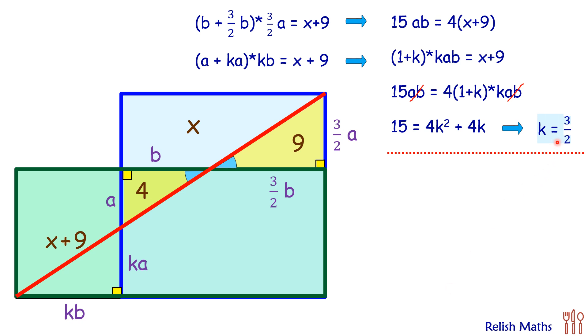So we have got the value of k as 3/2, or this line is 3/2 a and this is 3/2 b. Now if we just concentrate on this triangle, area of this triangle is 1/2 ab which equals 4. Solving it, we will get a times b equals 8.